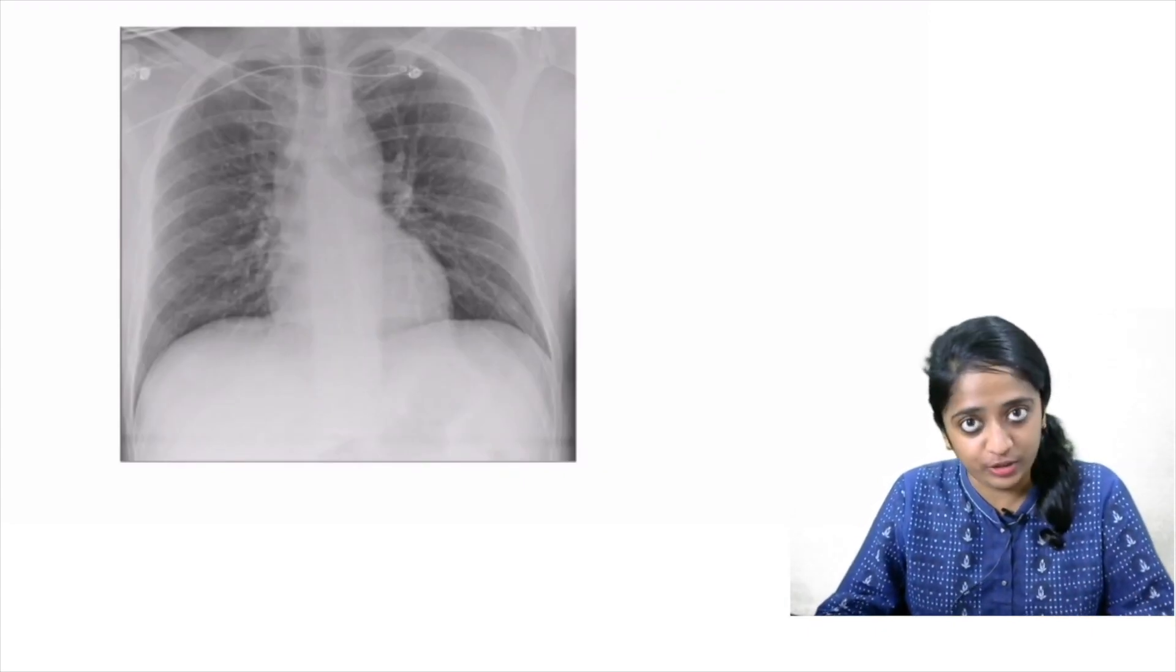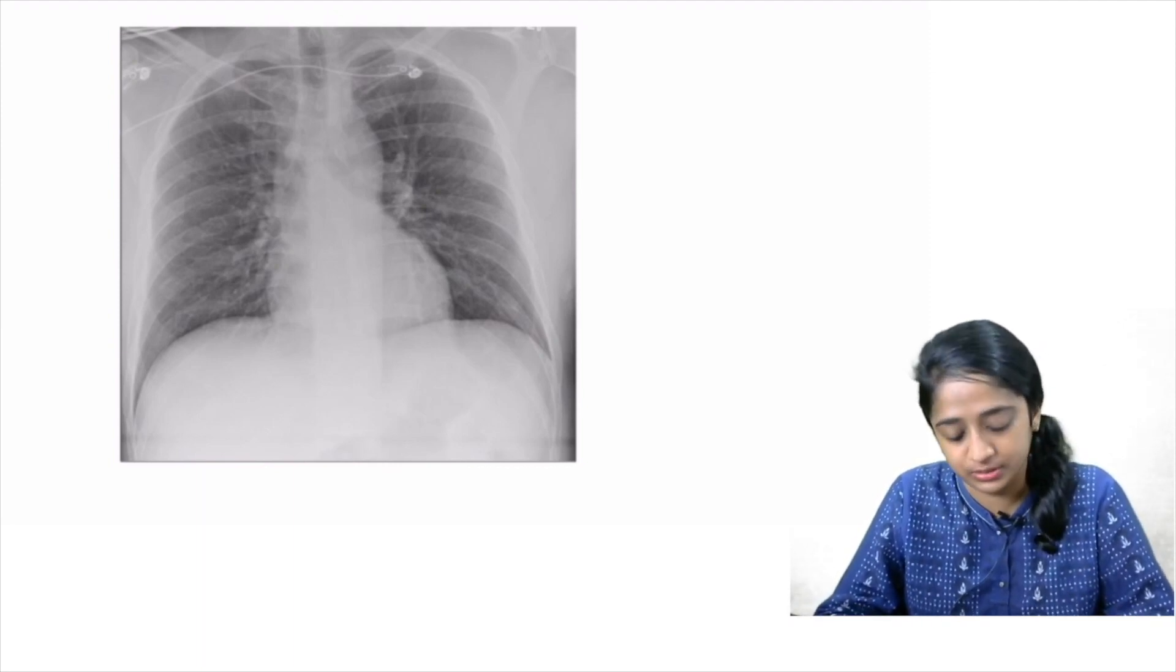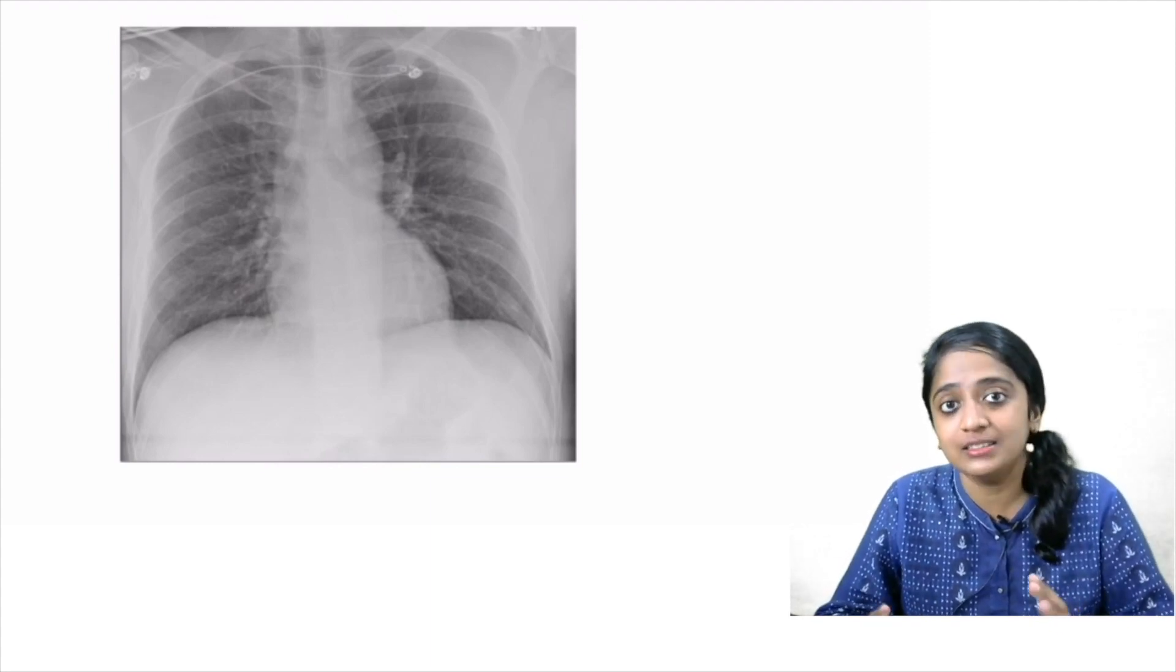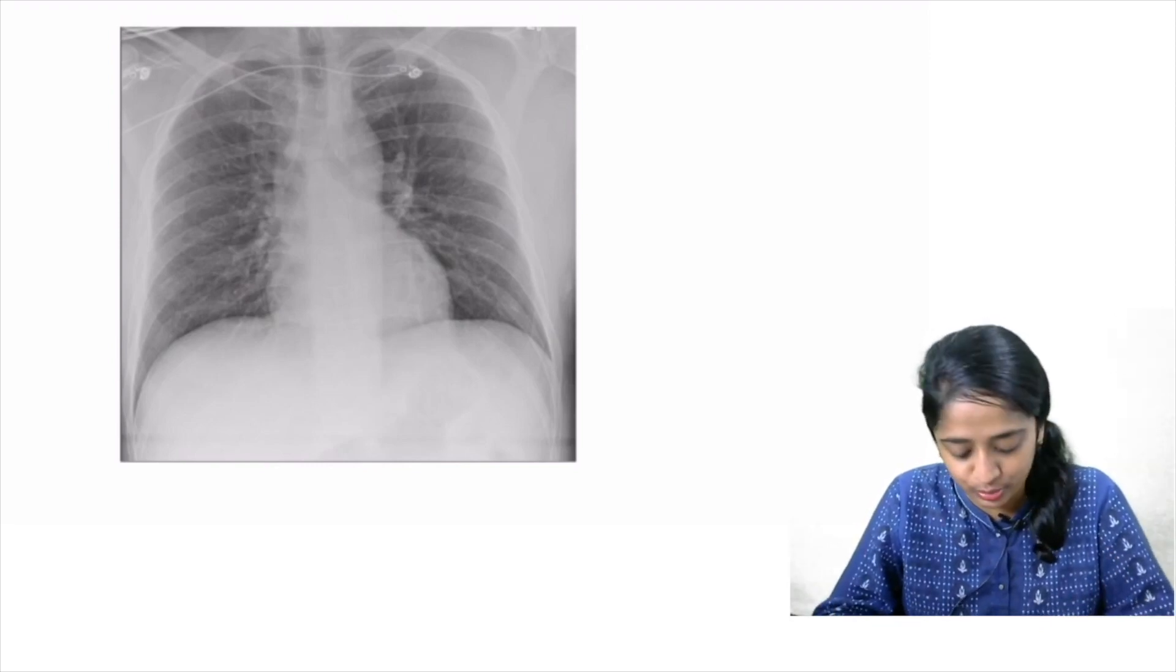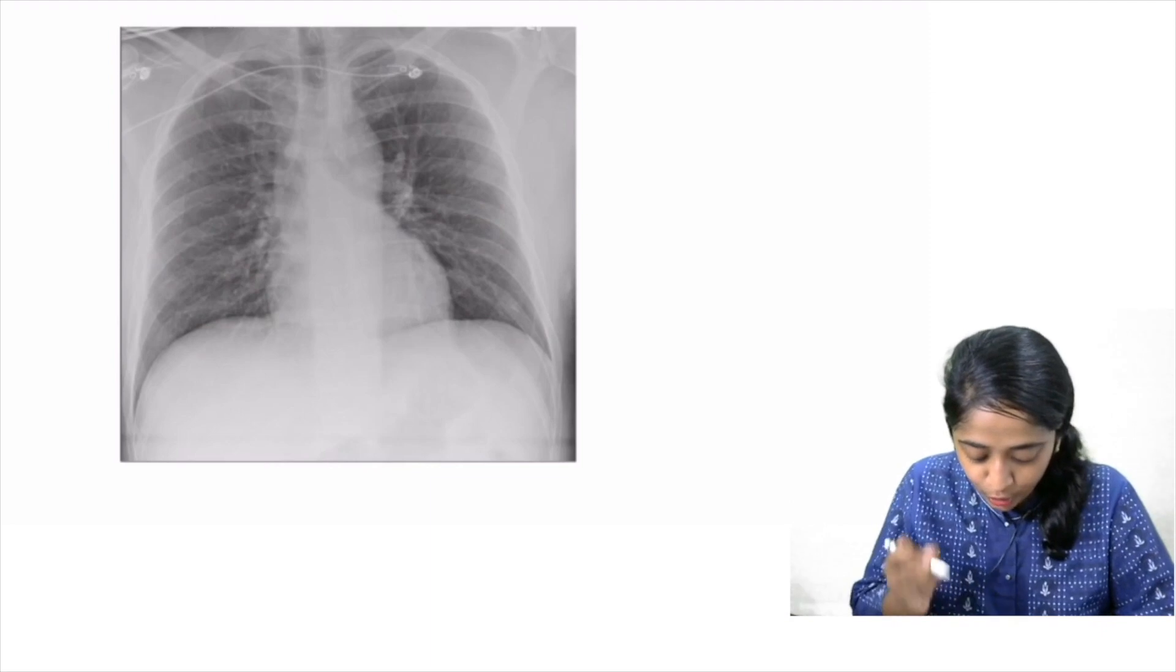Given to you is a radiograph. You can pause for a moment and look at the radiograph clearly to find out the diagnosis. Still you have not managed to see that. If you feel that it is apparently normal, what can you do? You have to compare both lung fields for symmetry. So comparing the right and the left lung field, what do I feel?